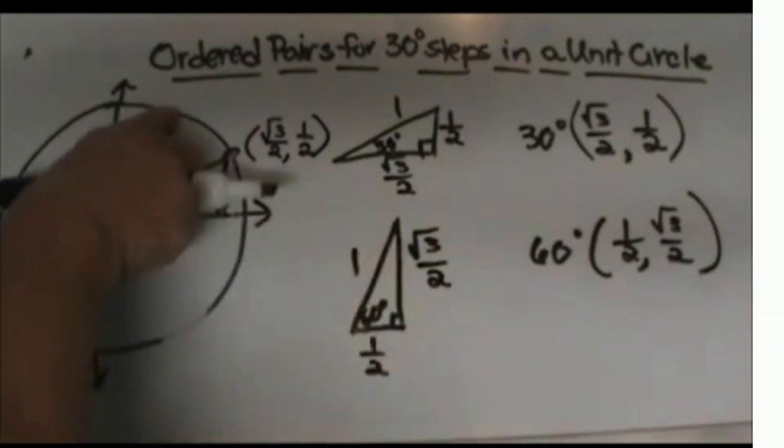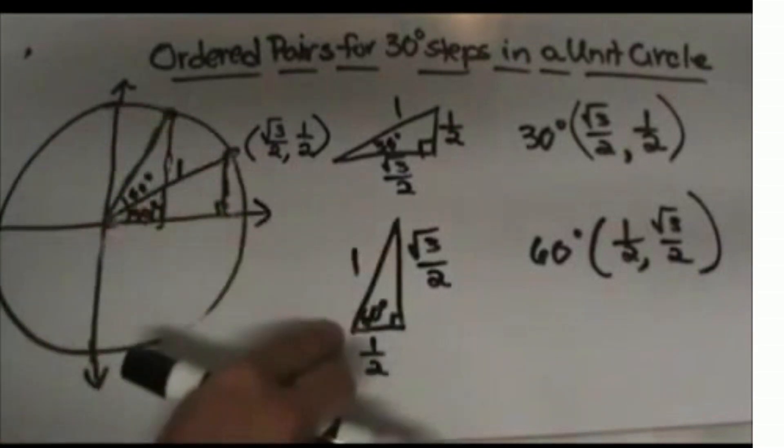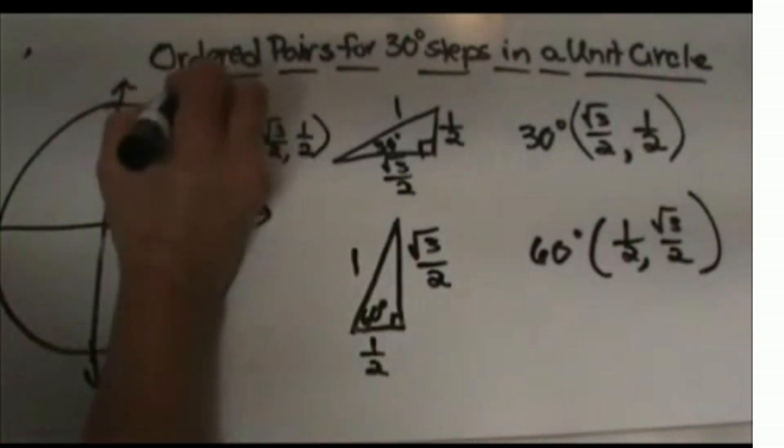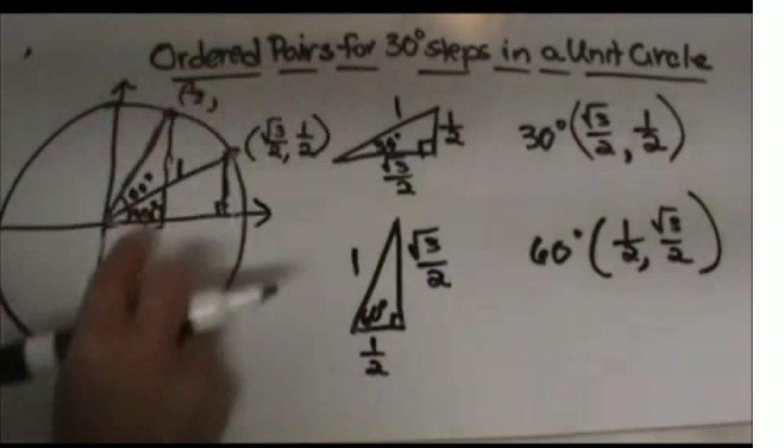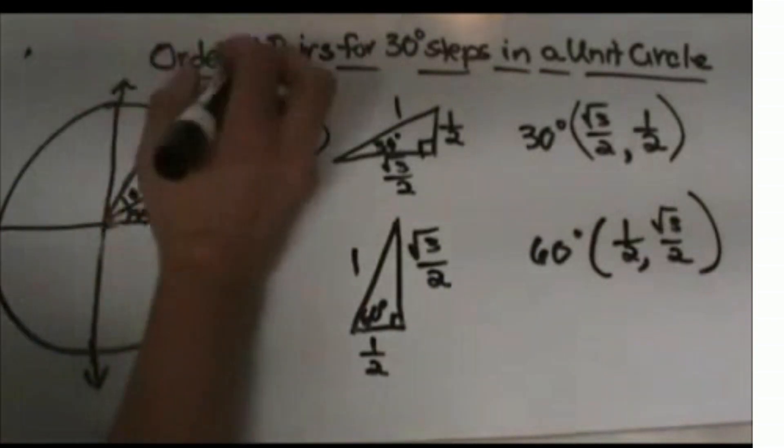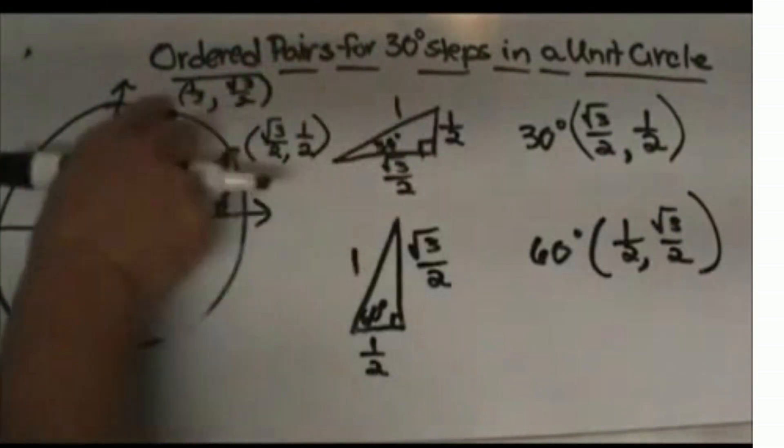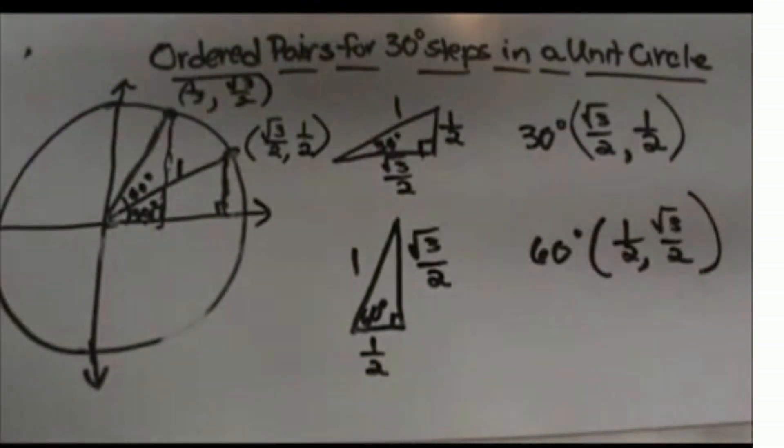The ordered pair for this point would be the short leg, or the x direction, which is 1/2, and then the long leg, which is up √3/2. Those are the first two coordinates in that quadrant.